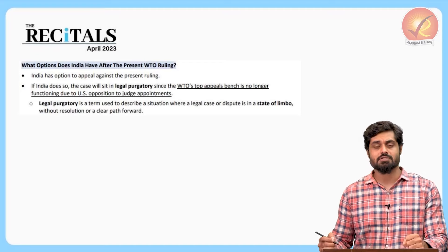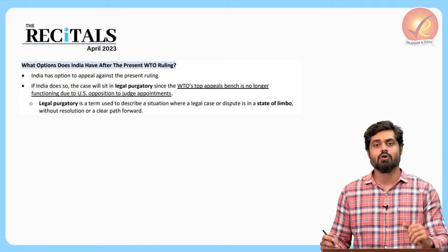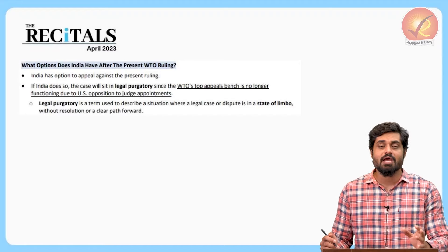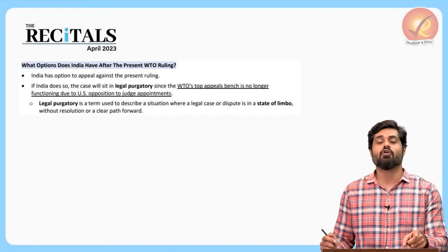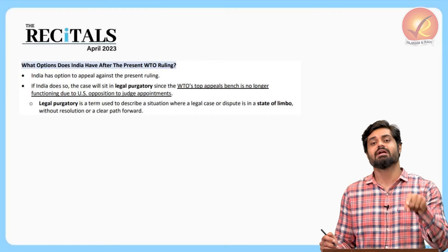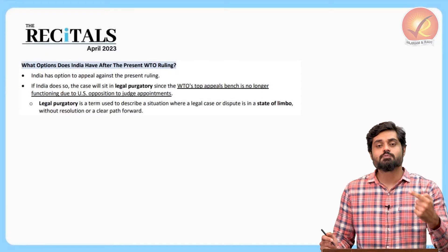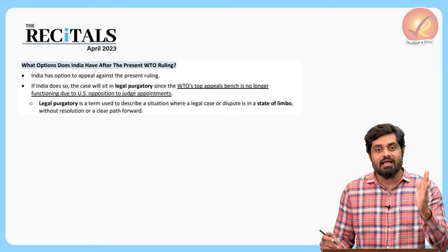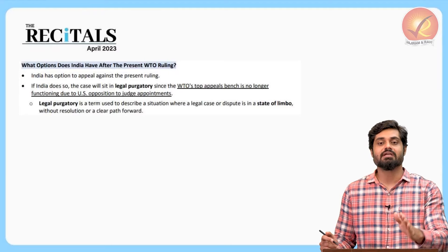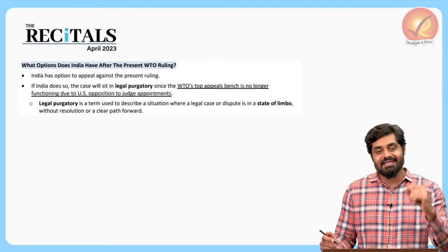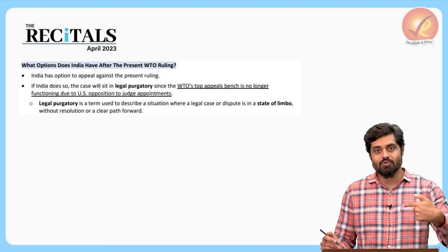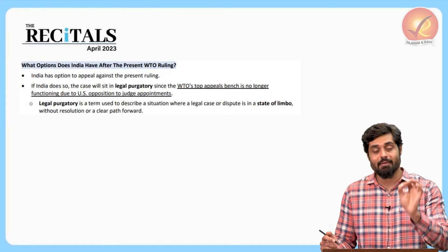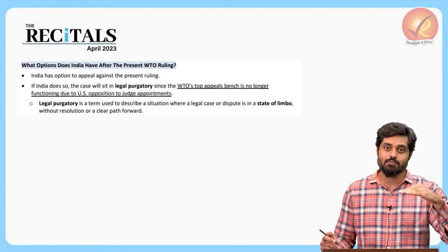If any dispute arises between countries, they must first resolve it through discussions. If that fails, they approach a dispute settlement panel. After the panel gives its ruling, they can go to the appellate body, whose ruling is final and binding. The recent ruling against India was by the dispute settlement panel — the second level of the dispute settlement mechanism — not by the appellate body.